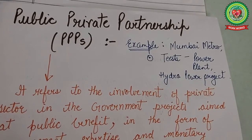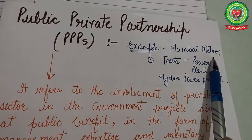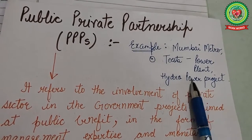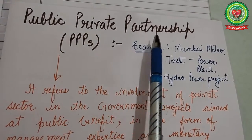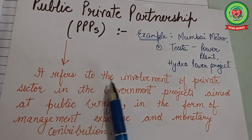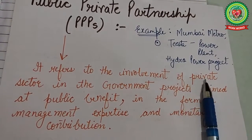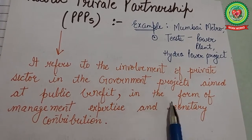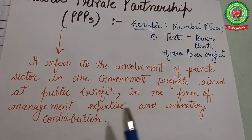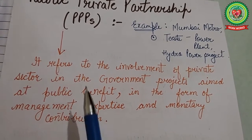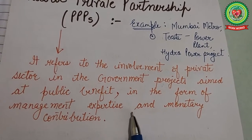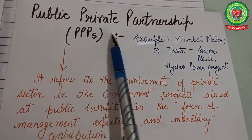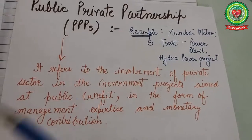Our next topic is public-private partnership. Examples include the Mumbai Metro, Pista Power Plant, and hydro power projects. It refers to the involvement of the private sector in government projects aimed at public benefit, in the form of management expertise and monetary contributions by both public and private enterprises — that is, government and private individuals working together.